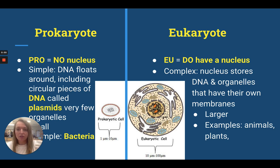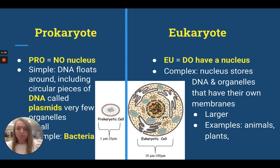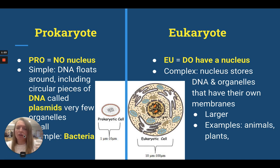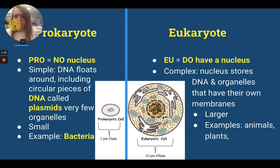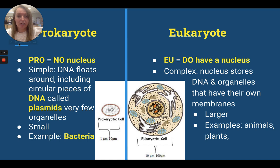We're on page one of your notes, and you'll need to fill out this table. Remember, pro rhymes with no — prokaryotes have no nucleus. The root 'pro' actually means before. So prokaryotic cells, or cells with no nuclei, evolved first. They're very simple. Their DNA just floats around, and their DNA forms those circles called plasmids. They don't have a lot of organelles. You can see that they're very small, and we're going to be focusing on bacteria.